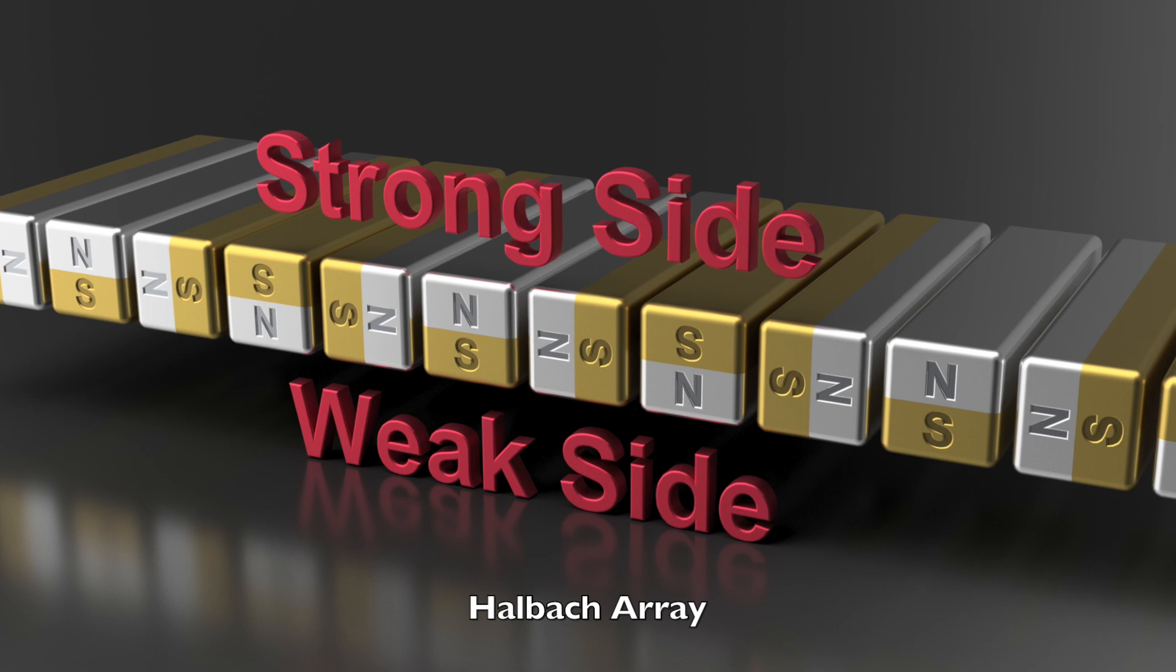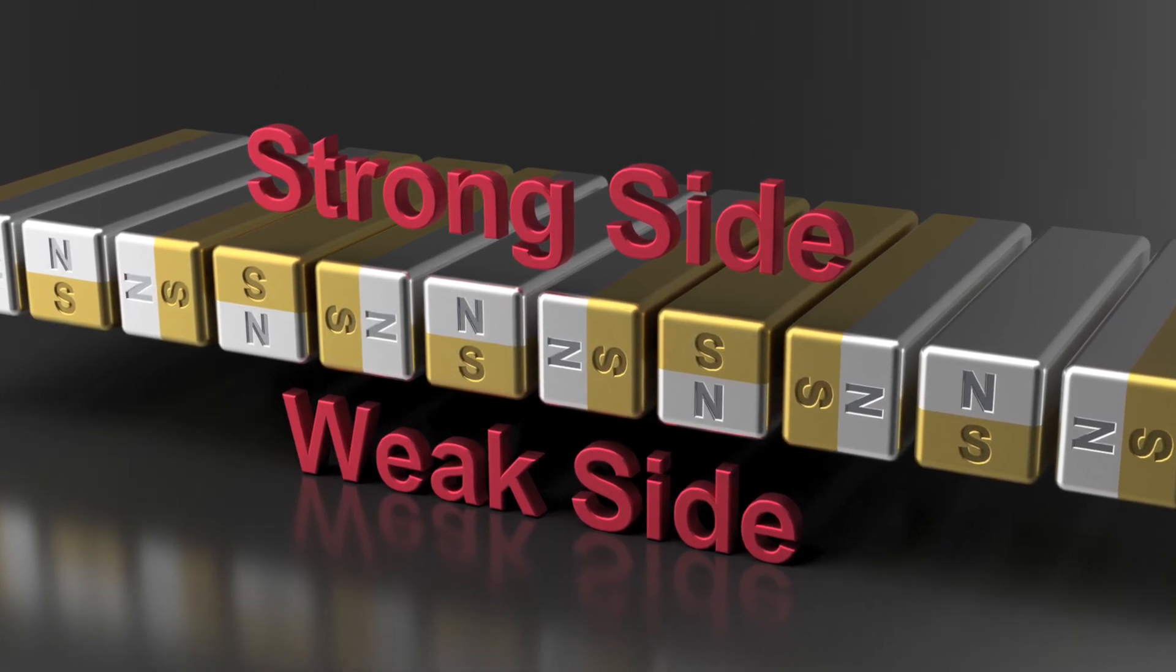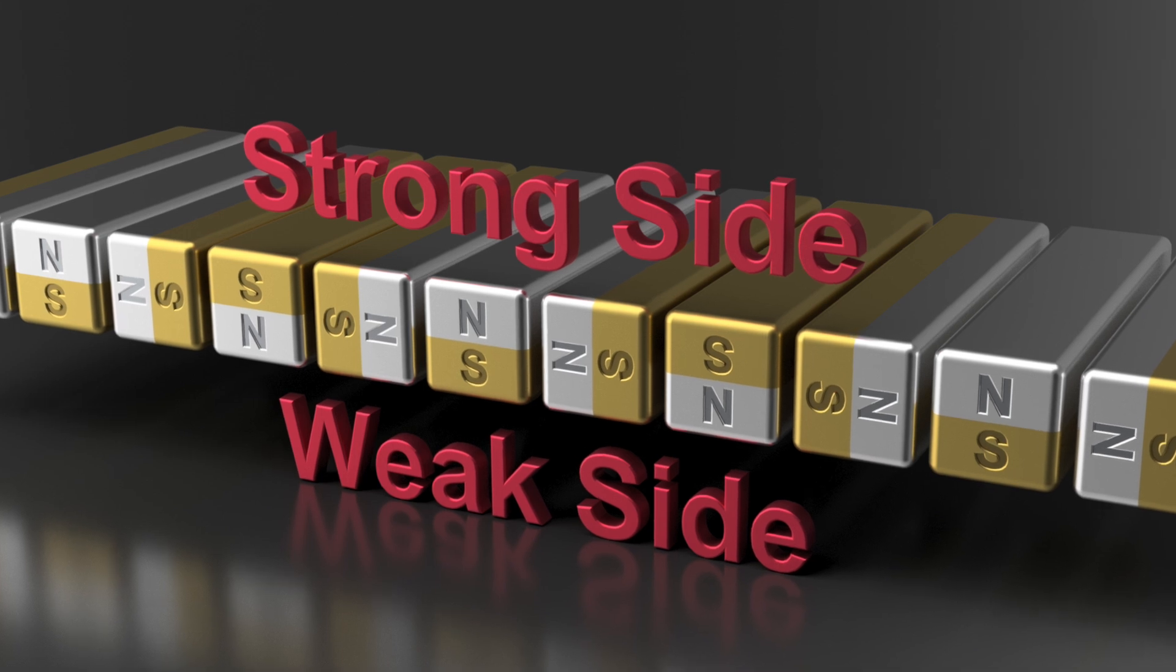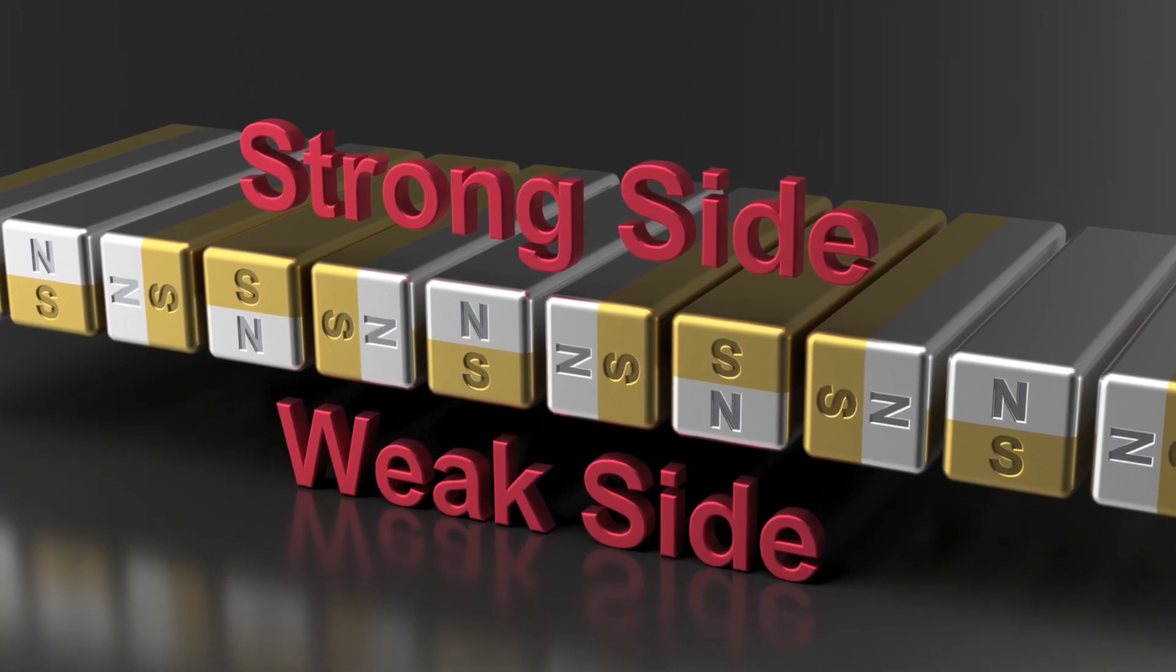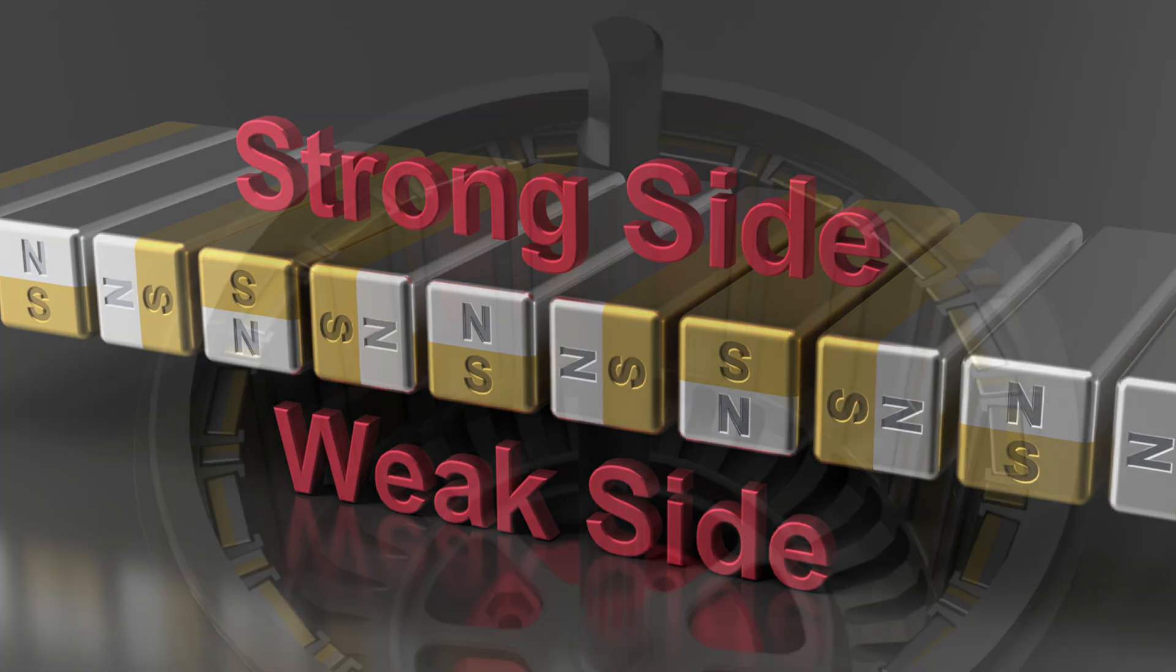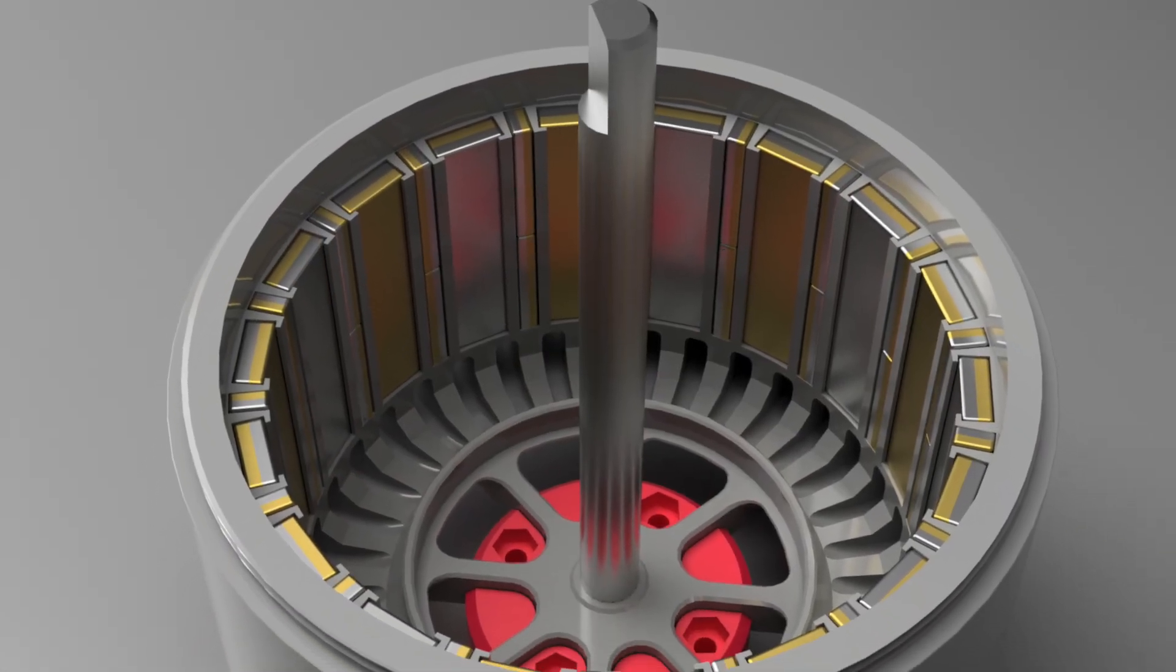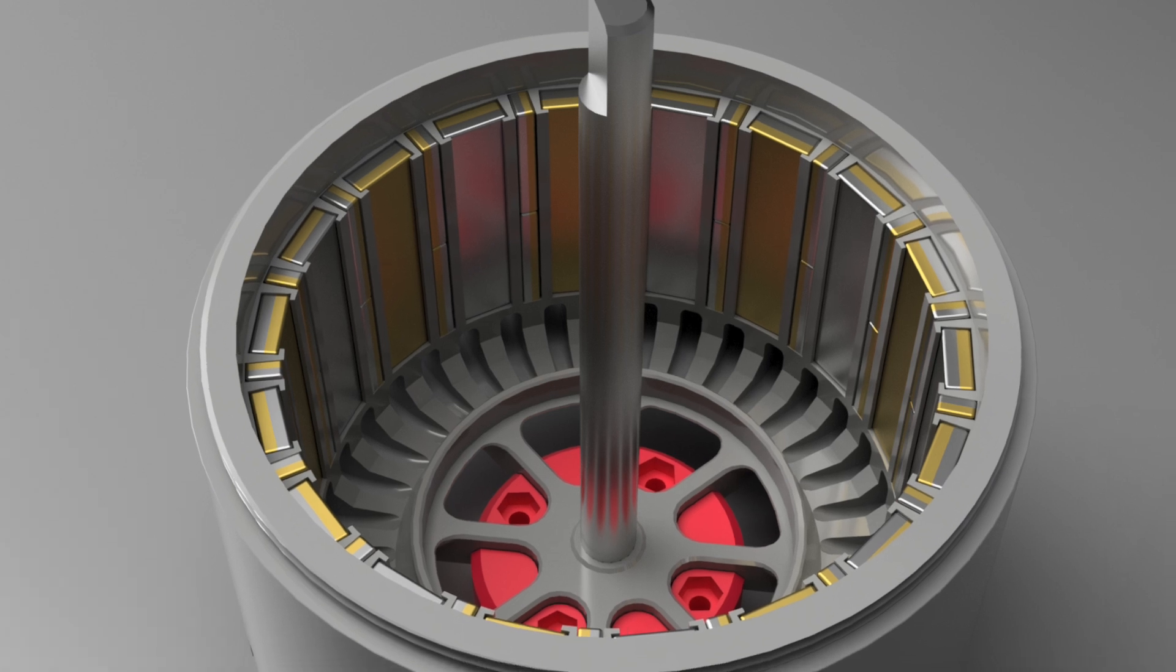The effect is an augmented magnetic field on one side of the array and a much weaker field on the other side. If you want to learn more about the Halbach array, you can find a great article in Wikipedia. The rotor has the stronger side of the array oriented inside towards the copper wires of the stator.